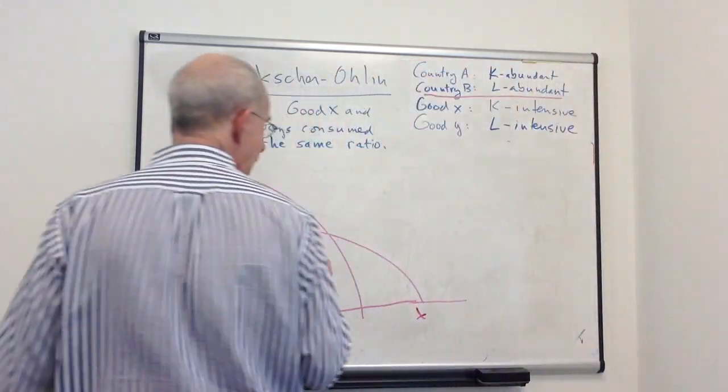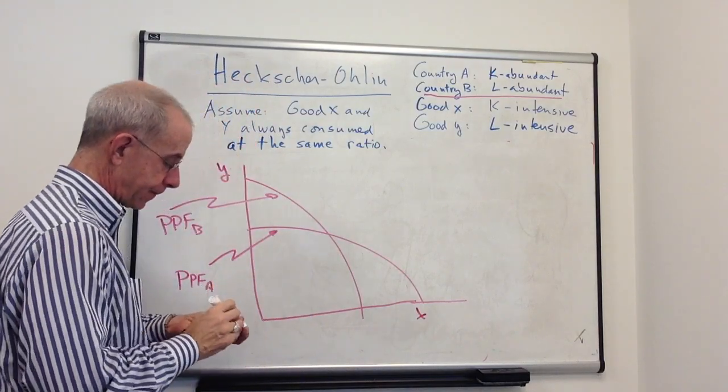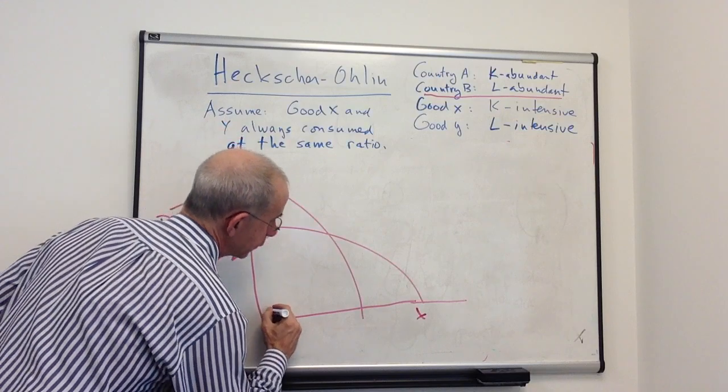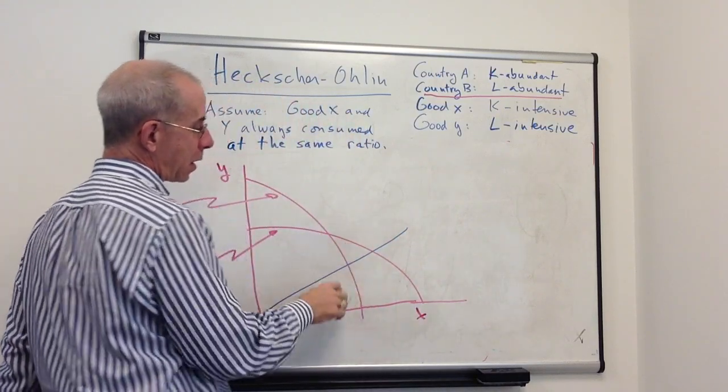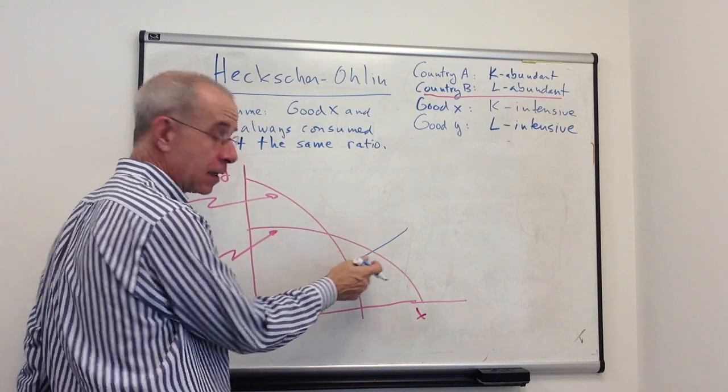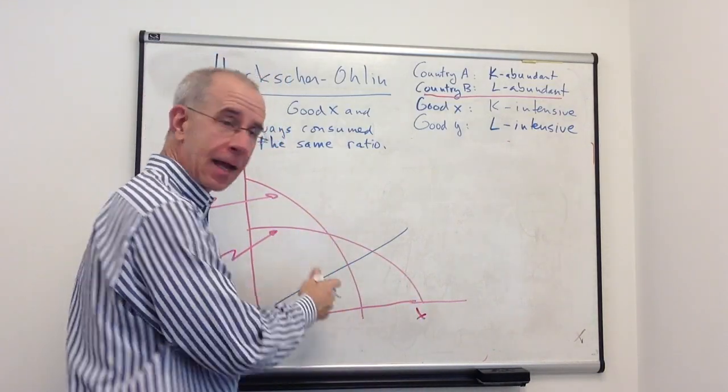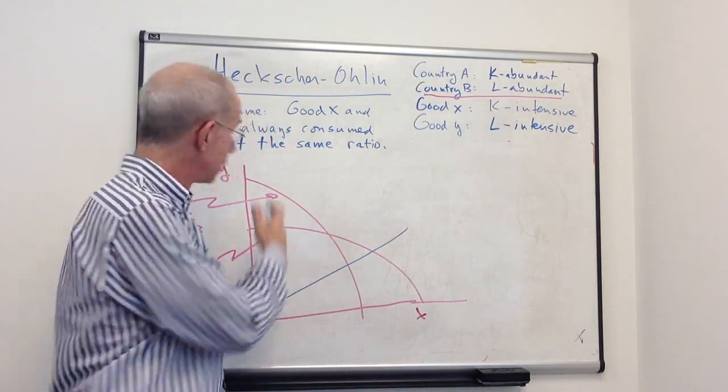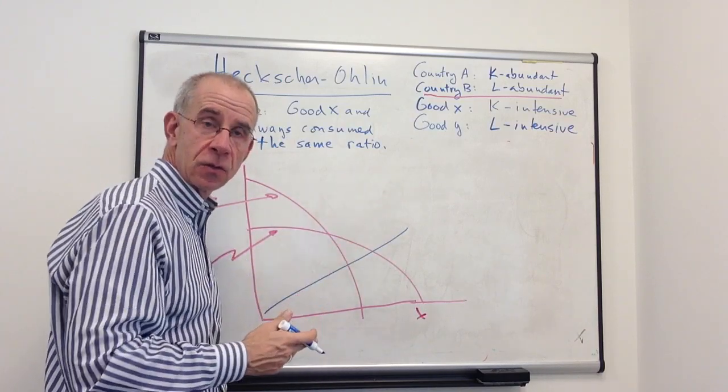Now, how do you depict that? That would be, for example, if these two countries consumed Y and X at this proportion given by the blue line. Let's say they always buy exactly this ratio of good Y and good X depicted by this straight line.